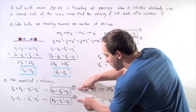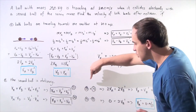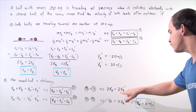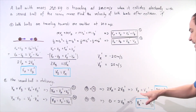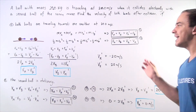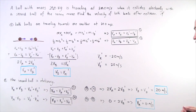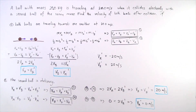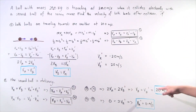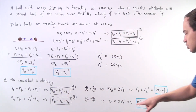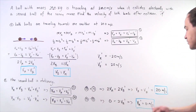Adding equations three and four gives 2V-A equals 2V-B prime, so V-A equals V-B prime. The initial velocity of object A, 20 meters per second, is transferred to the final velocity of object B. Taking the difference gives us the final velocity of object A equals zero meters per second.